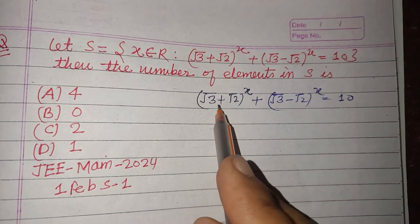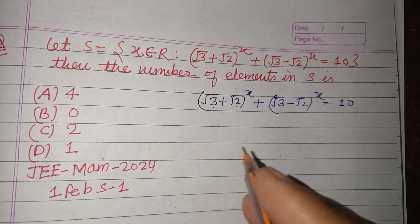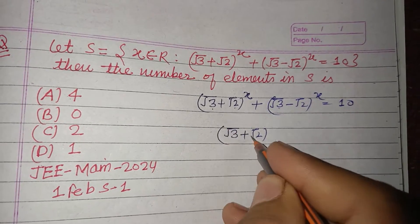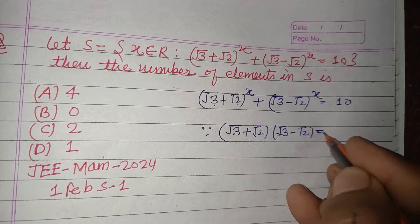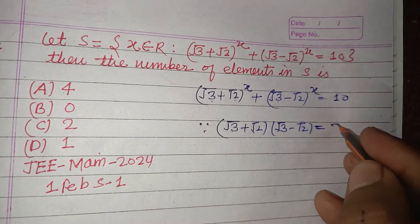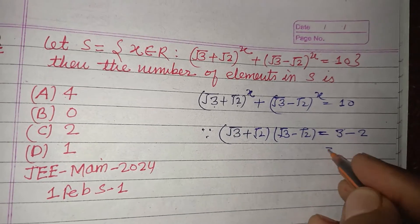You can consider that √3 + √2 and √3 - √2 are inverses of each other, because (√3 + √2)(√3 - √2) equals (√3)² - (√2)² = 3 - 2 = 1.